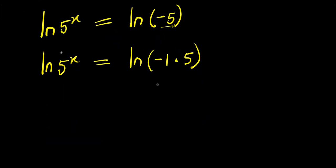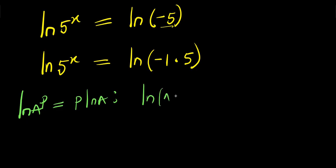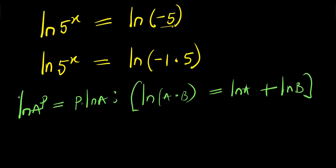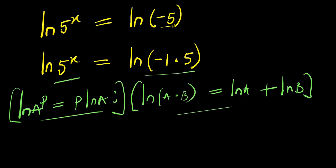Now, let's consider these two identities. You have natural log of a power b, this equals b times natural log of a. If you have natural log of a times b, this equals natural log of a plus natural log of b. Considering these two identities — the first one we apply to the left side, the second one we apply to the right side. So, applying this, we have x times natural log of 5 equals natural log of negative 1 plus natural log of 5.